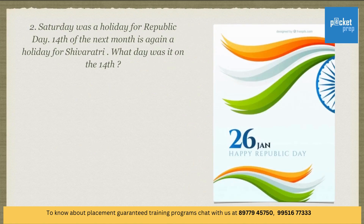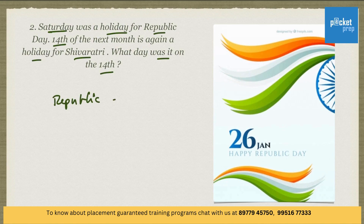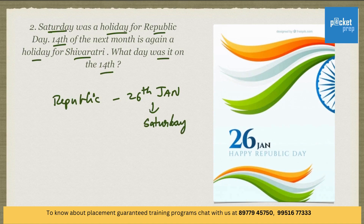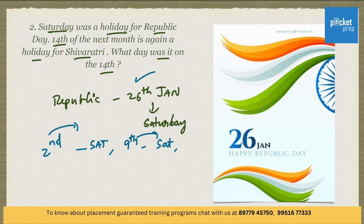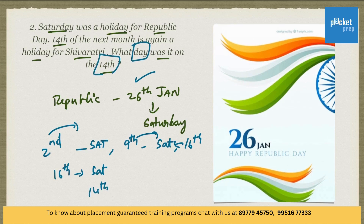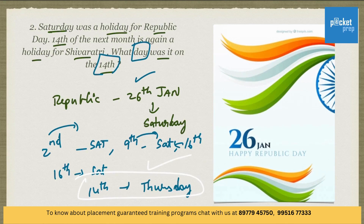Another question. Saturday was a holiday for Republic Day. The 14th of the next month is again a holiday for Shivaratri. What day was it on the 14th? Republic Day is on 26th January, and it was a Saturday. One week from 26th is 2nd February (Saturday), then 9th (Saturday), then 16th (Saturday). Since 16th February is Saturday, the 14th February is two days earlier, which is Thursday. Therefore, the answer is Thursday.